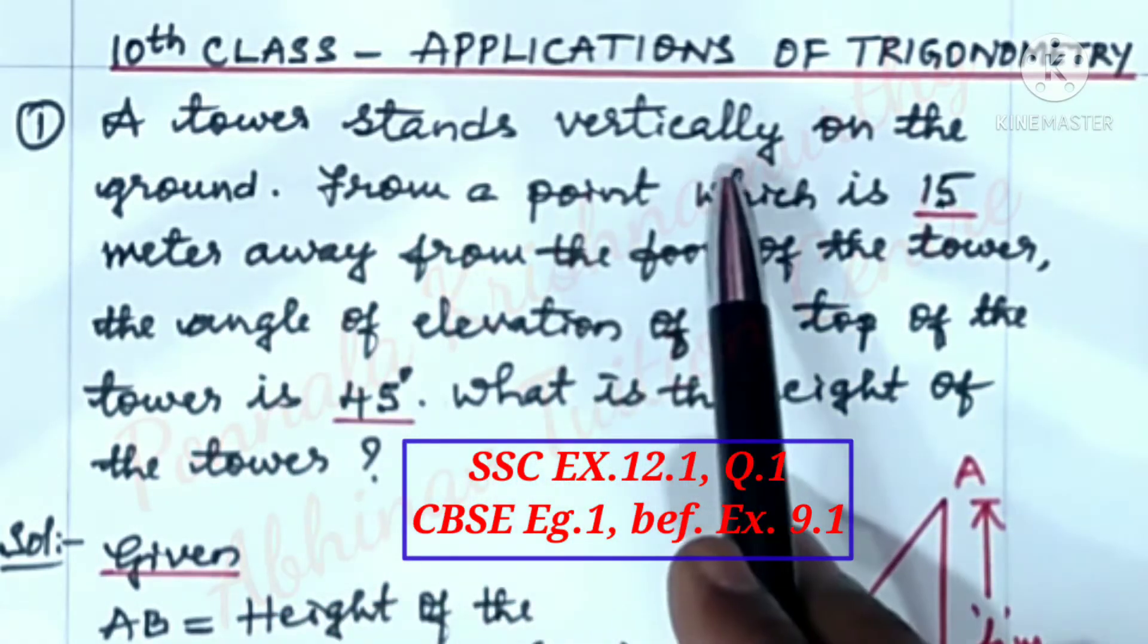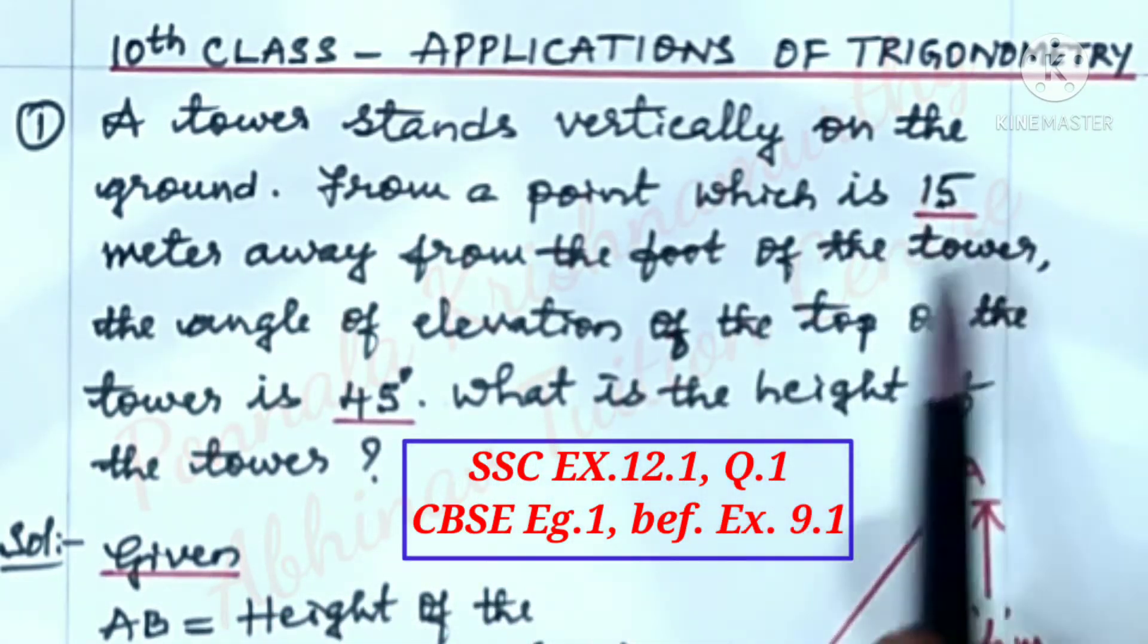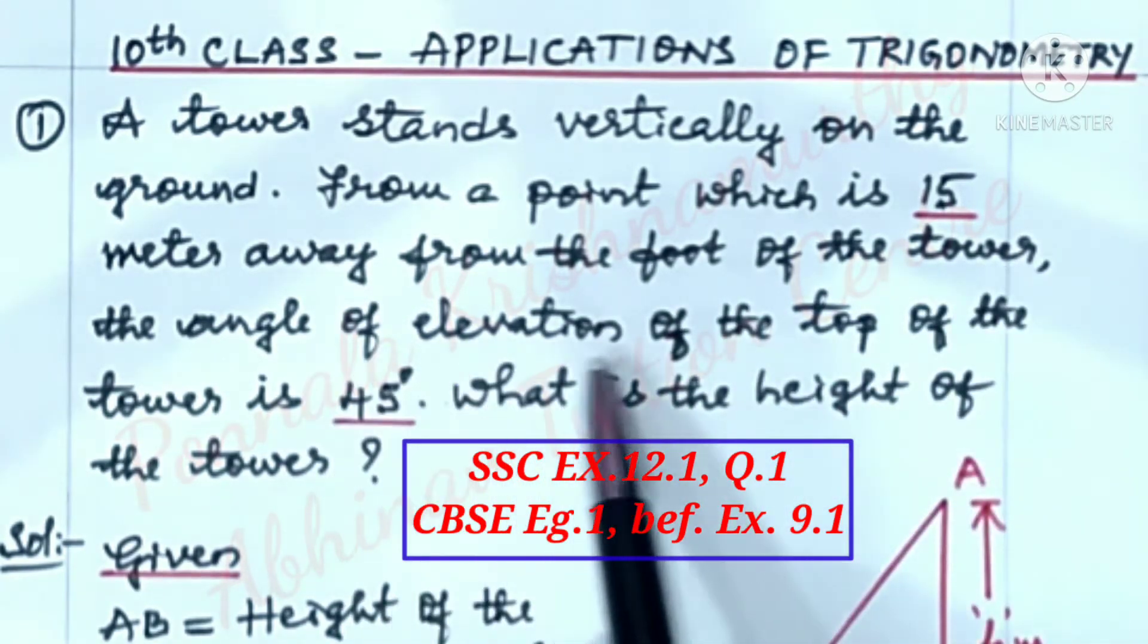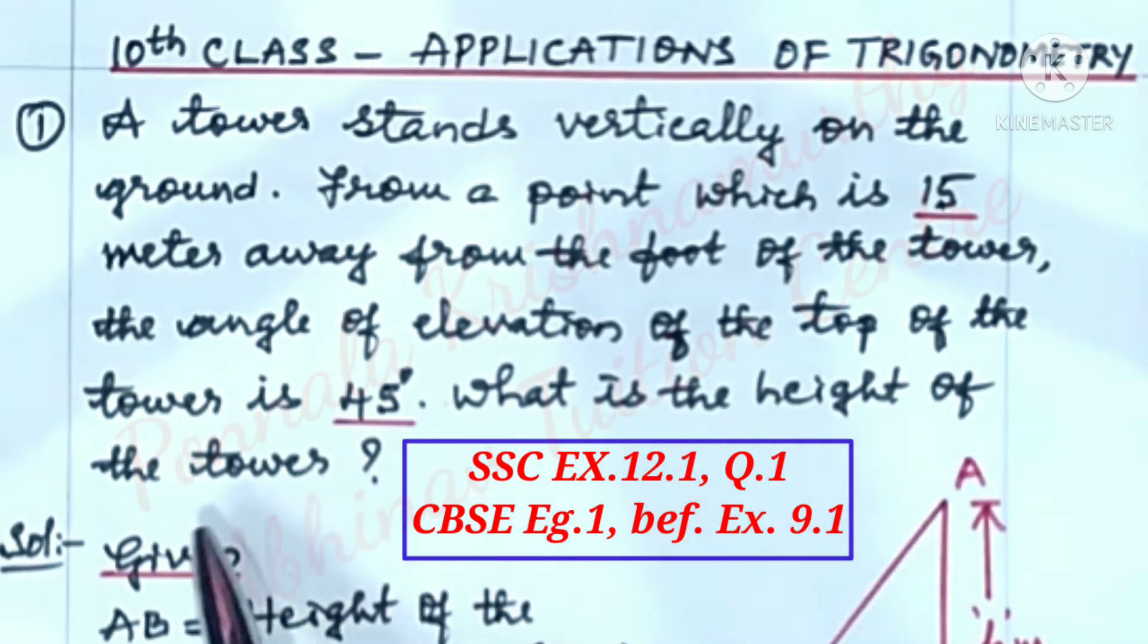A tower stands vertically on the ground. From a point which is 15 meters away from the foot of the tower, the angle of elevation of the top of the tower is 45 degrees. What is the height of the tower? Reference is here.